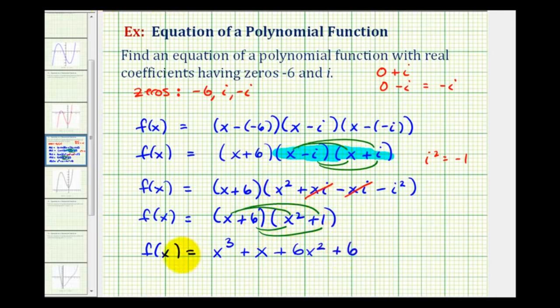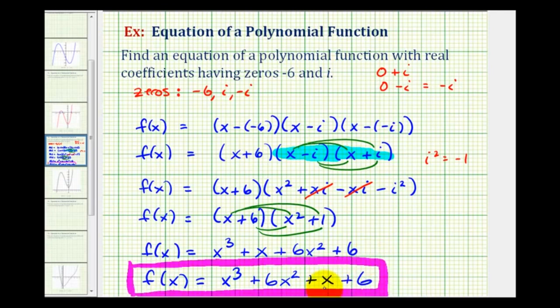This would be a polynomial function that has the given zeros. Let's go ahead and write these terms in descending order. So we'd have x cubed. We want the x squared term next, so we'll have plus six x squared, plus x, plus six. This degree three cubic function would be a polynomial function that has the given zeros.